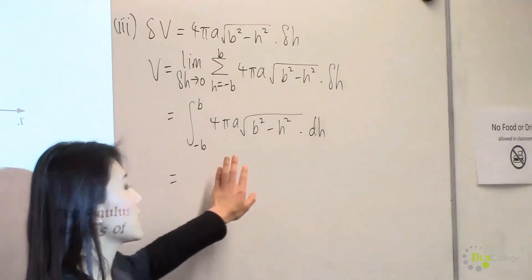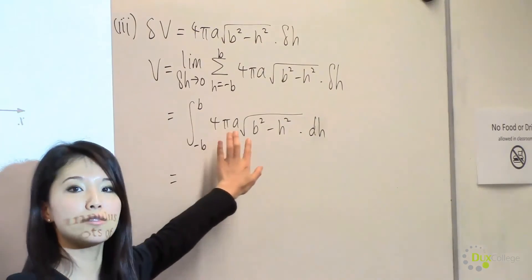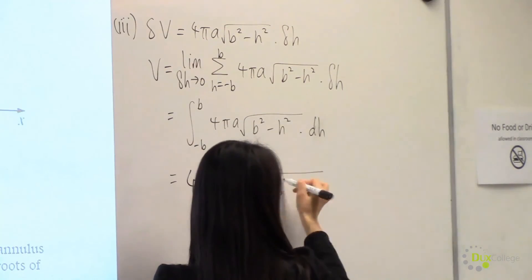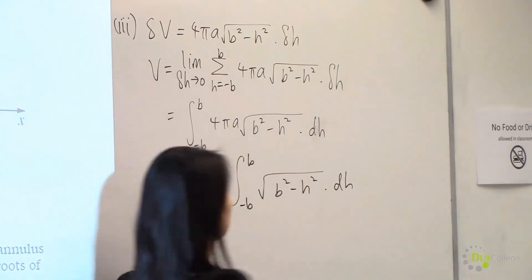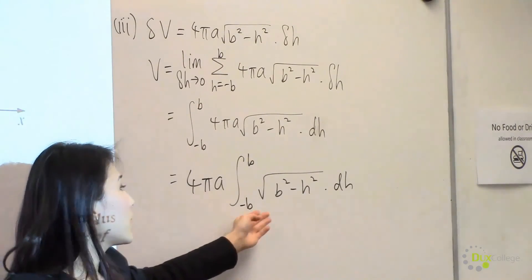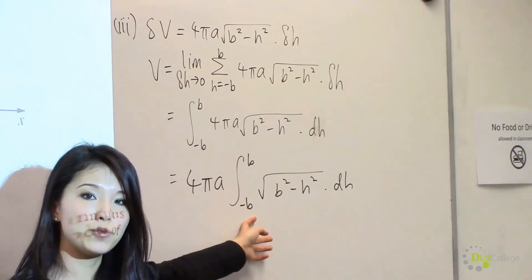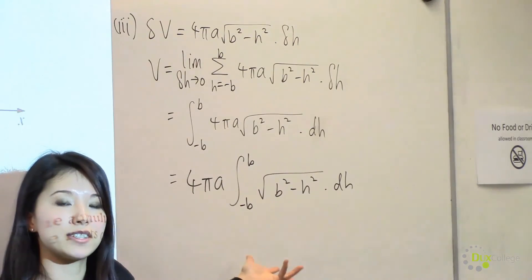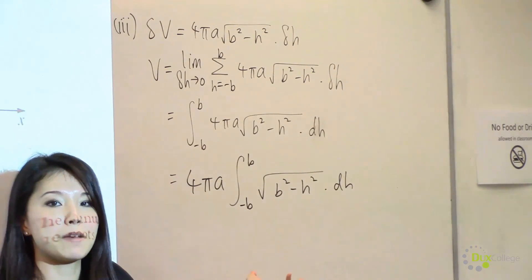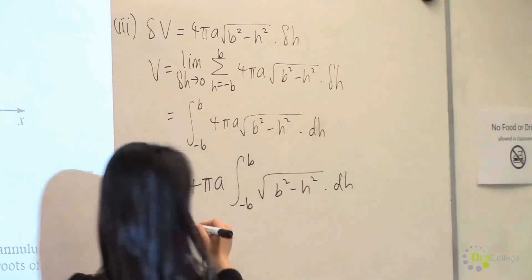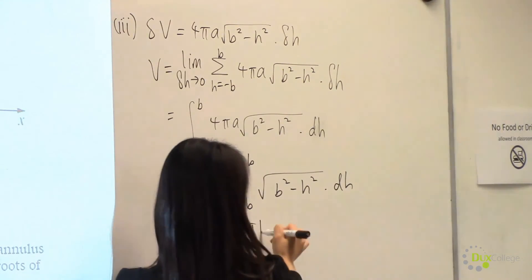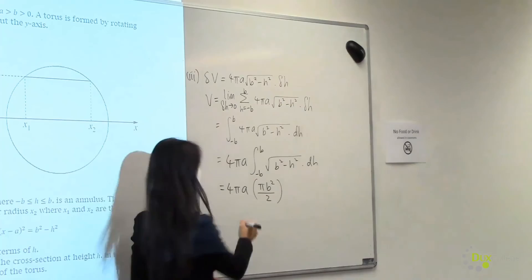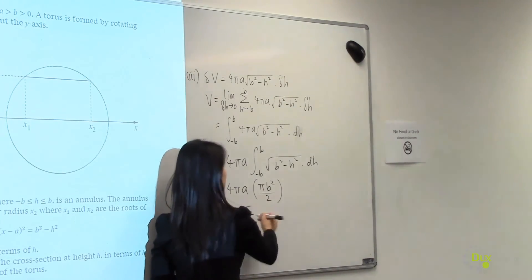To solve this integral, let's first take out the constant 4πa. The remaining integral is the area of a semicircle with radius b. So instead of solving the integral directly, we can find the area of a semicircle with radius b, which is π b squared divided by 2. Simplifying, we get 2π²ab², and this is the volume of the torus.